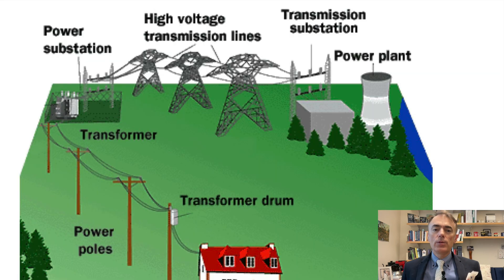Power plants use step-up transformers to increase voltage for transmission and step-down transformers near cities to lower the voltage for safe use in homes and businesses. This strategy ensures efficient energy transfer over long distances while keeping energy losses minimal.